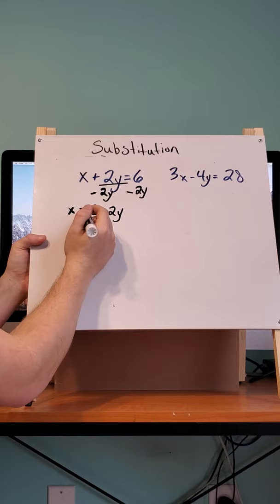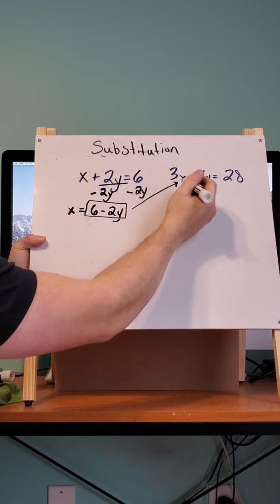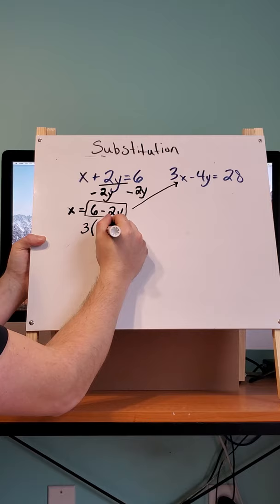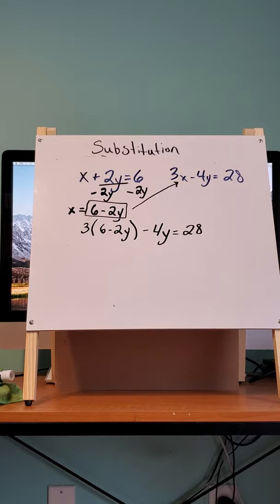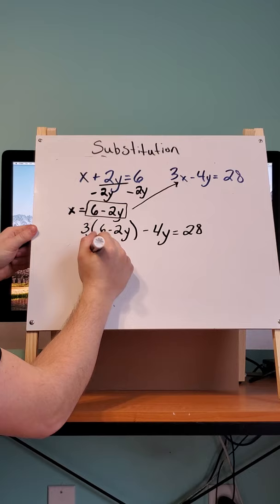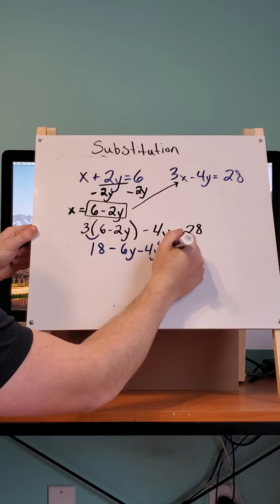And now I can plug this portion in for my x right there. So then I can rewrite it as 3 times 6 minus 2y, minus 4y equals 28. So we're going to go ahead and distribute. Combine like terms.